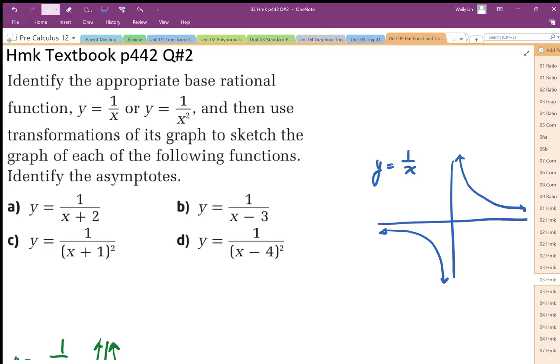This means the base function shifts negative 2, so our vertical asymptote shifts to negative 2, and we end up with the same function with all points shifted over negative 2.